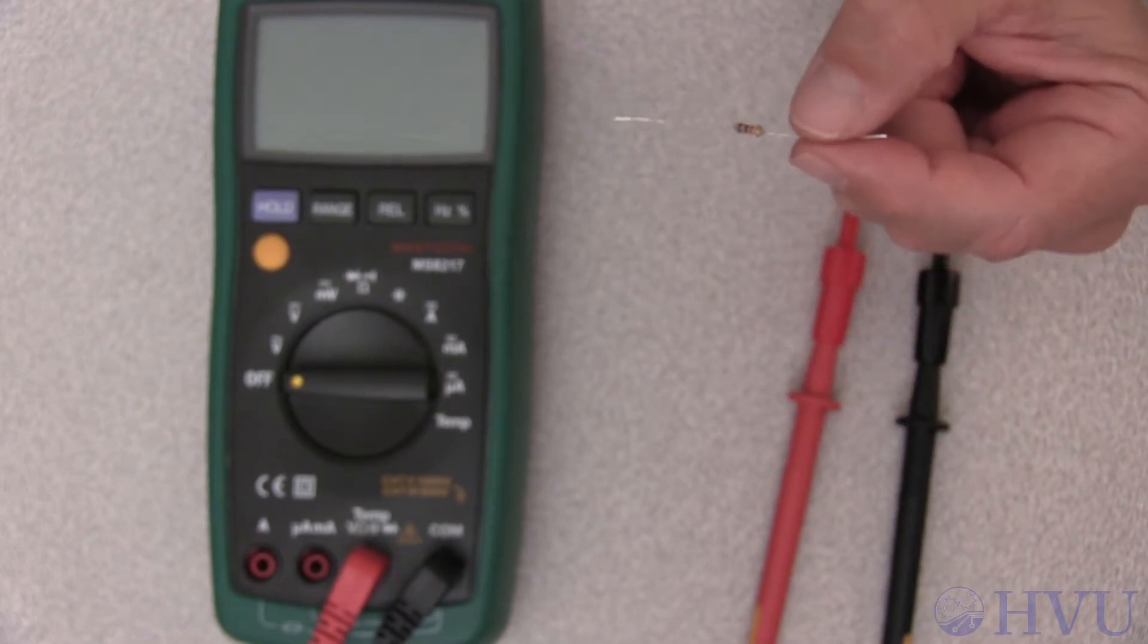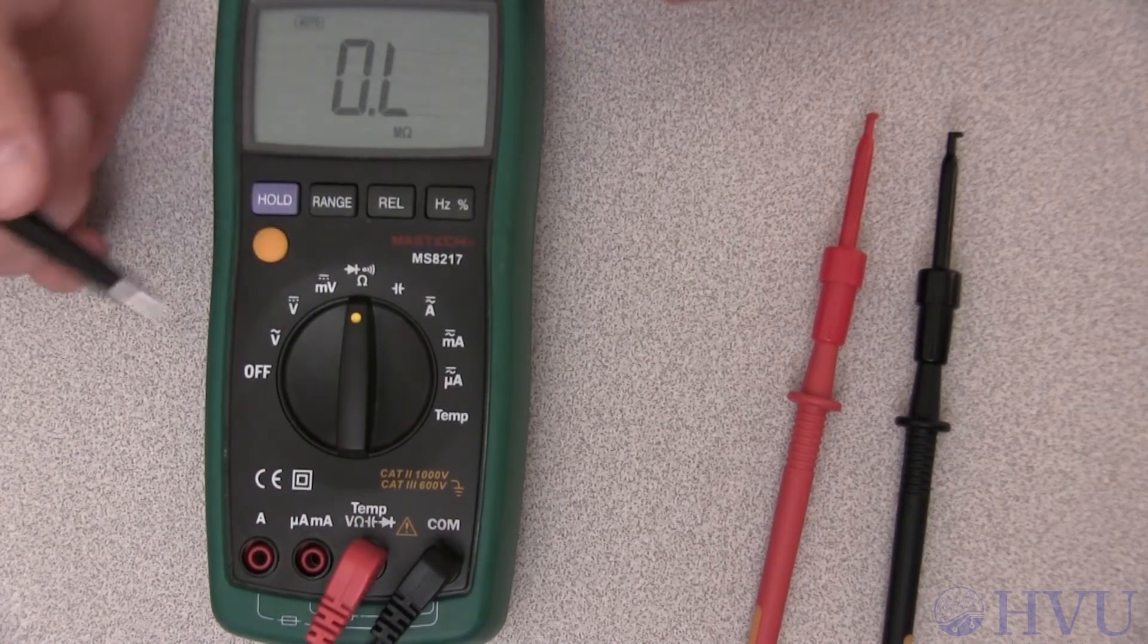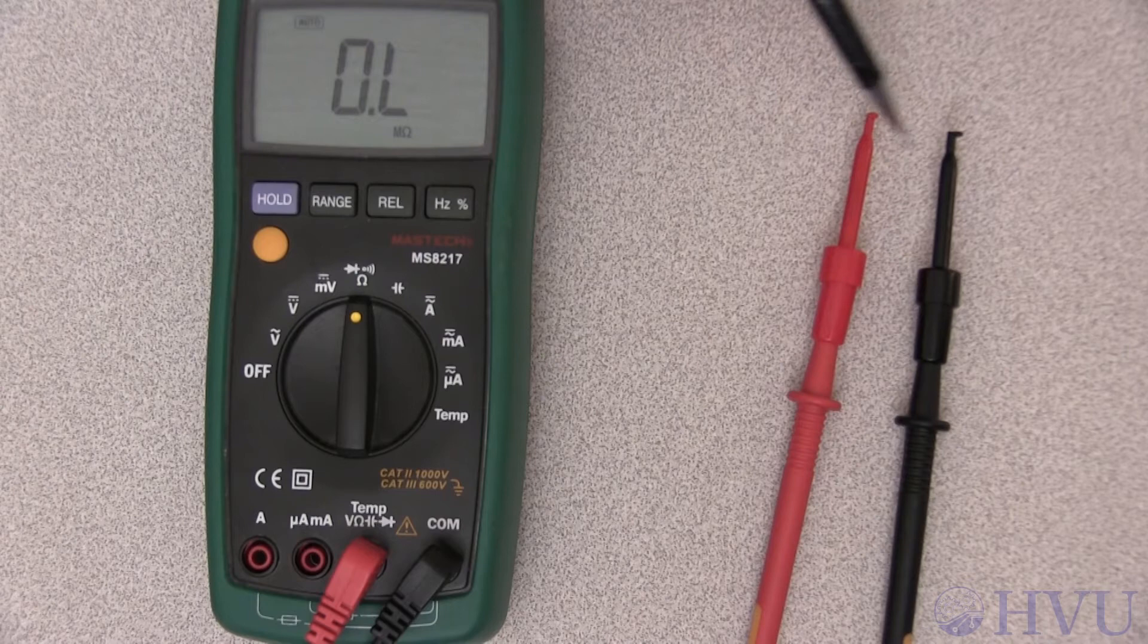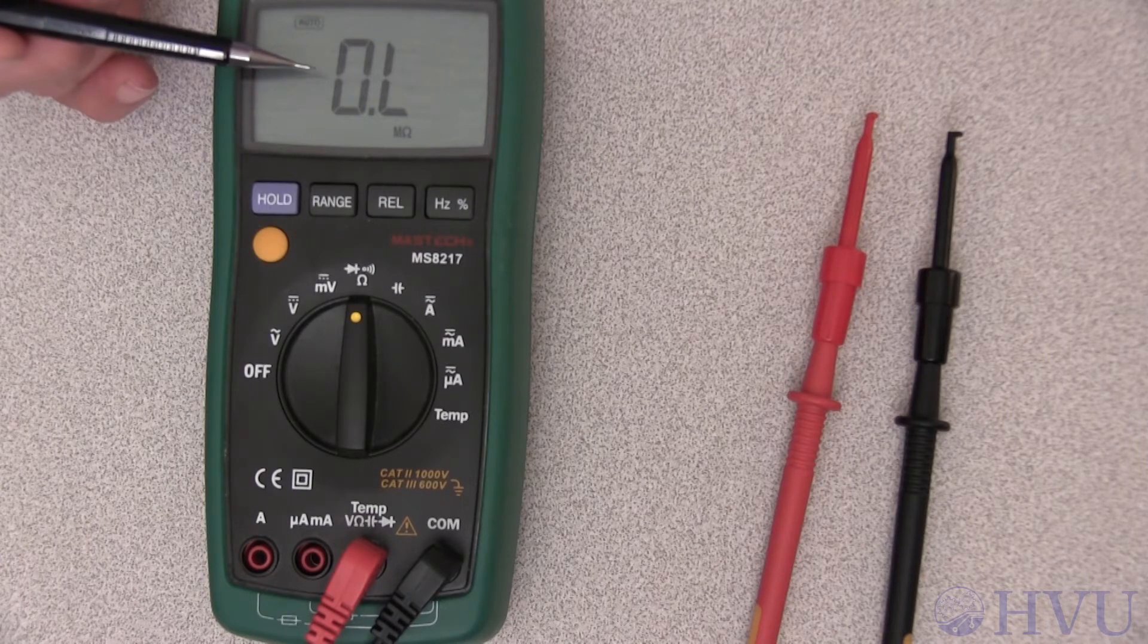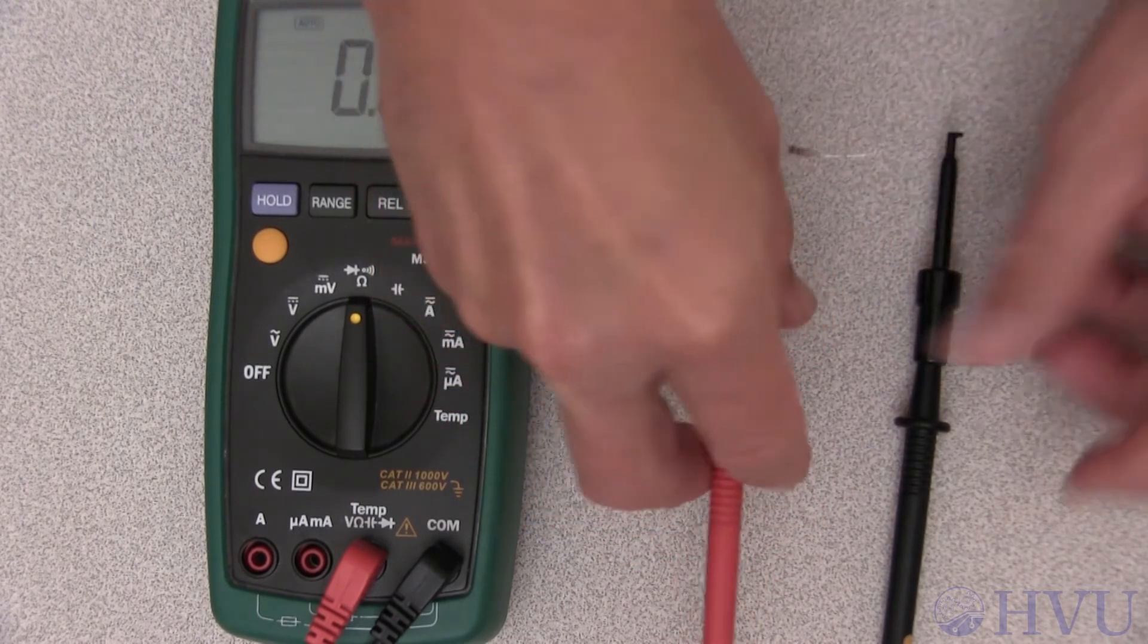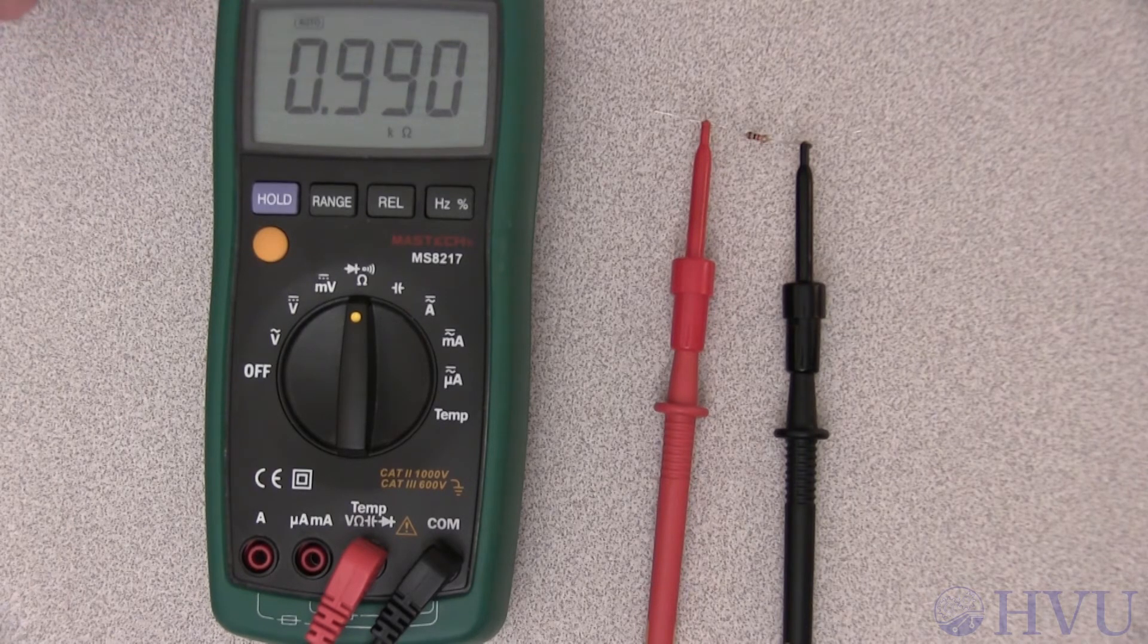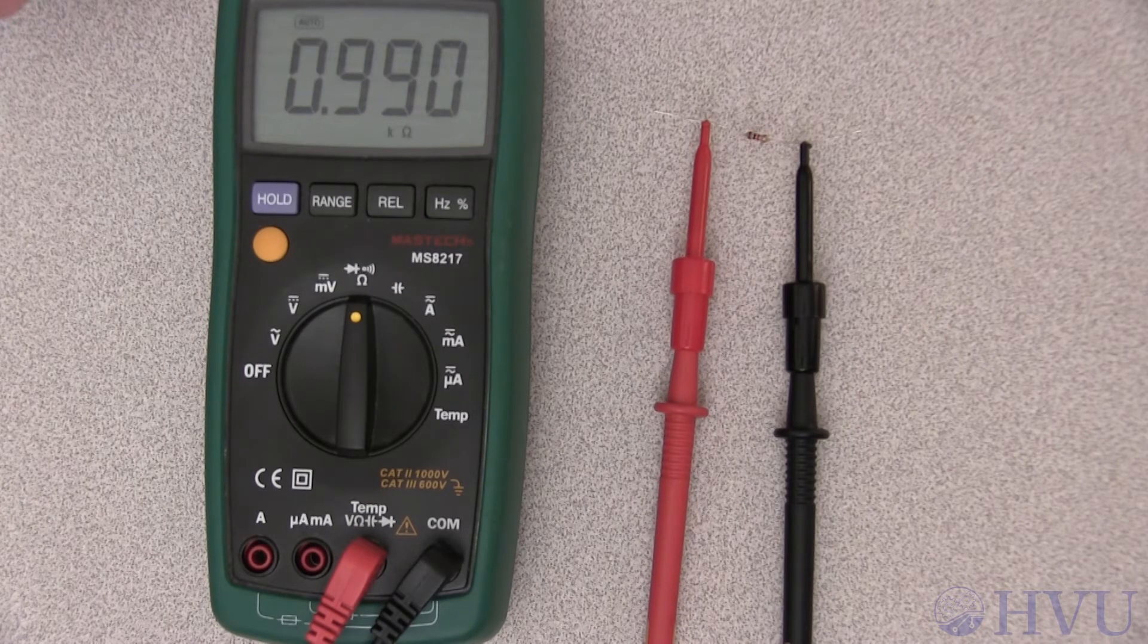Let's check the resistance with a DMM. In order to measure resistance, set the selector knob to the ohm symbol, and insert the DMM leads into the COM and volt ohm ports. If the resistance between the leads is too high for our DMM to measure, as in the case where there's nothing between the leads, the DMM display reads OL. This stands for overload, and simply means that the resistance is higher than the DMM can register. When I clip the DMM leads to my resistor, I get a measured resistance of 0.99 kiloohms, which is 990 ohms. Since the tolerance band of this resistor is gold, the measured resistance is well within 5% of the nominal value.